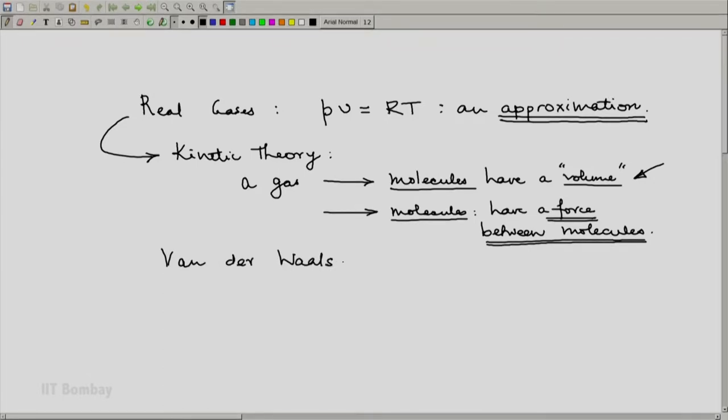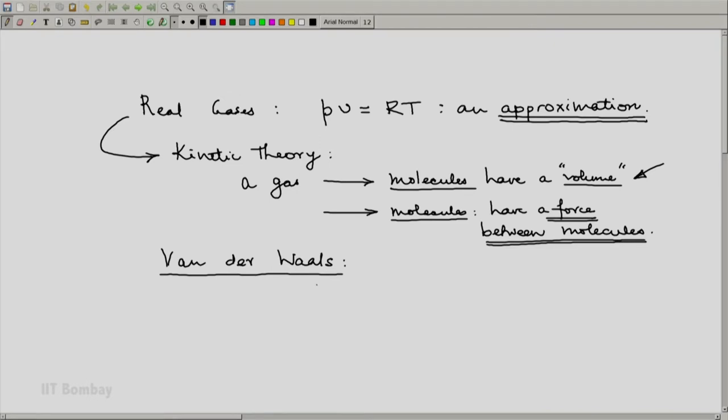Van der Waals was a scientist who took these two effects into account and provided a better approximation to real gases than the ideal gas approximation. The ideal gas approximation is simply PV equals RT. The Van der Waals model modifies this: P plus A by V square times V minus B is RT.